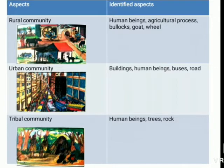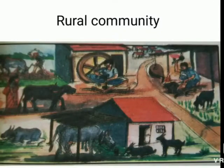So in rural community you can see old-type wheels and all; in urban you will find buildings, buses, and cars; and in tribal community you will find very different things. These are the key differences among all three communities, and this is how we can identify each one.